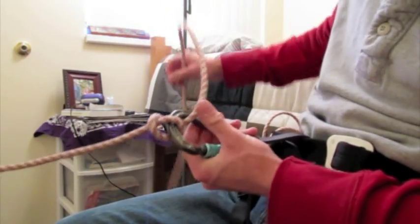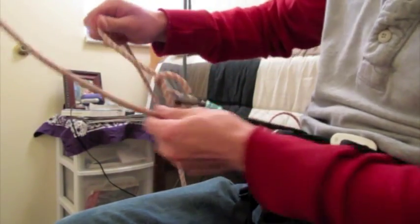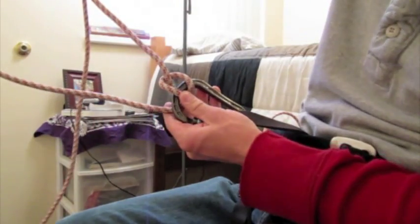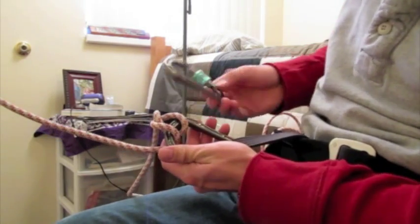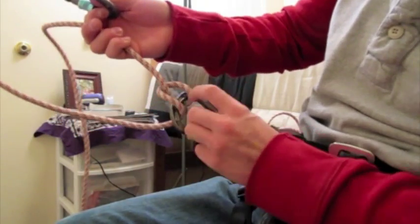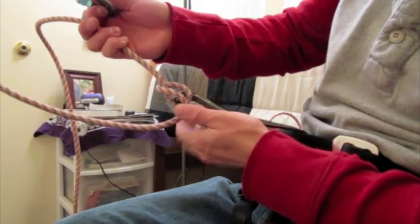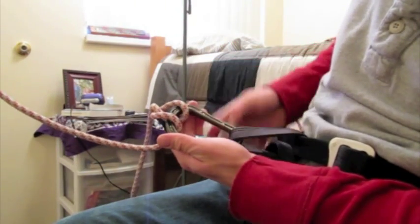So now you want to take this, your down rope, pull it up, like it would be going up to the pulley. Take your second beaner. Here we are. And then in this loop, right there, you want to make sure the gates are opposed in this method.